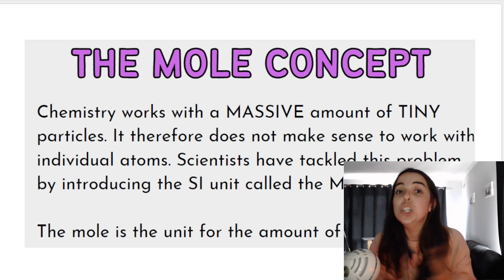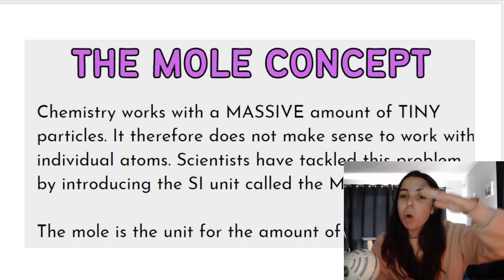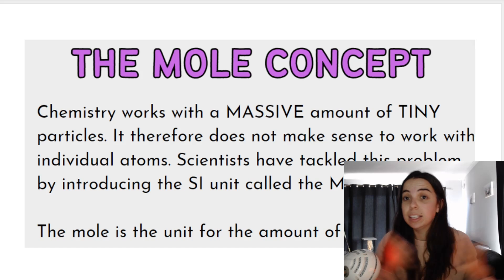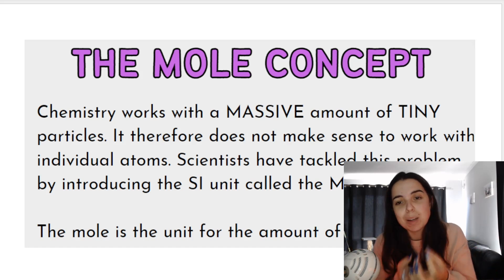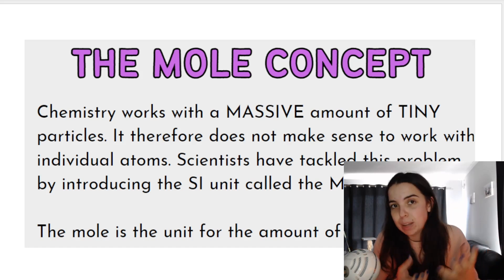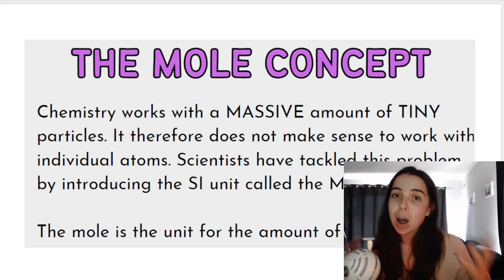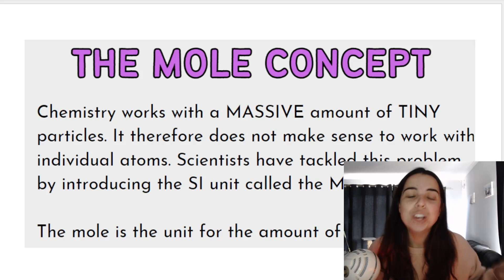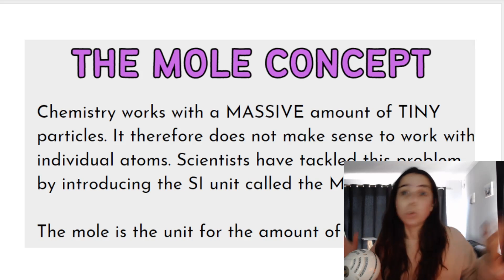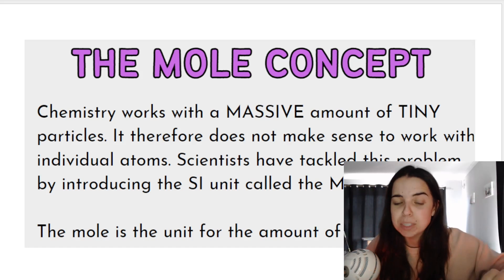An SI unit is basically a unit that we use to measure something. The SI unit for height is meters — we measure height in meters. The SI unit for mass is kilograms or grams. So the SI unit for the amount of a substance is moles. I can have one mole, 1.5 moles, two moles, or 20 moles of a substance — it tells me the amount of substance.